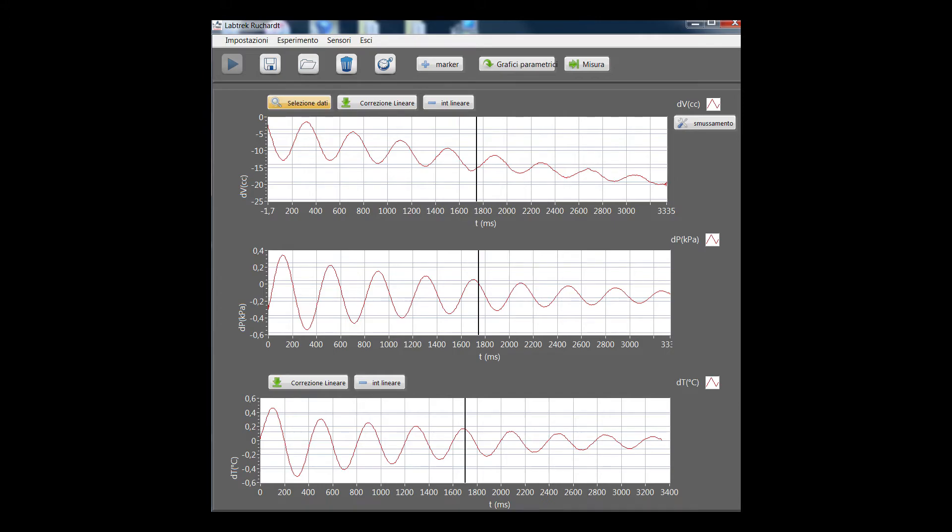Labtrek has created a very fast thermometer, with response times of the order of a millisecond. In this way we can calculate the gamma value by following different paths and verifying the compatibility of the values found.